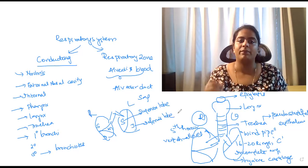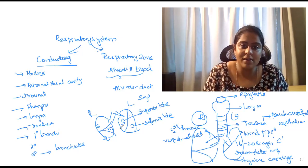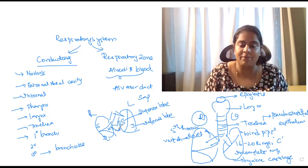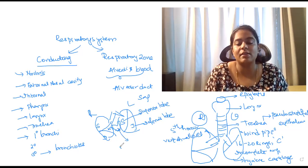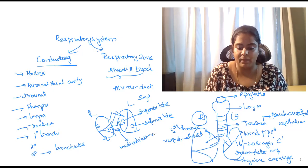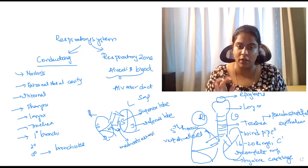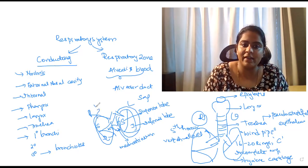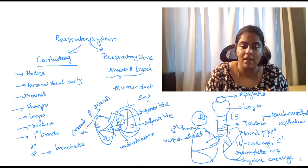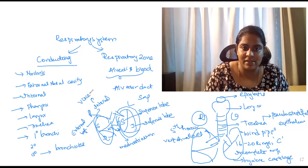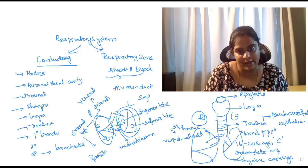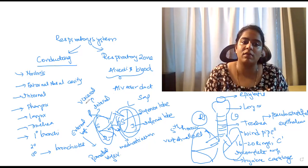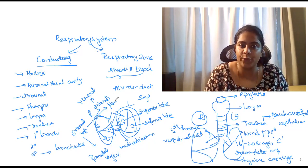Your heart is tilted to the left side and is present between the lungs in a space called the mediastinum. The lung has a covering called the pleura, and it is covered by two layers: an internal layer and an external layer. The internal layer is called the visceral layer and the external layer is called the parietal layer. The space between the two layers is the pleural cavity.